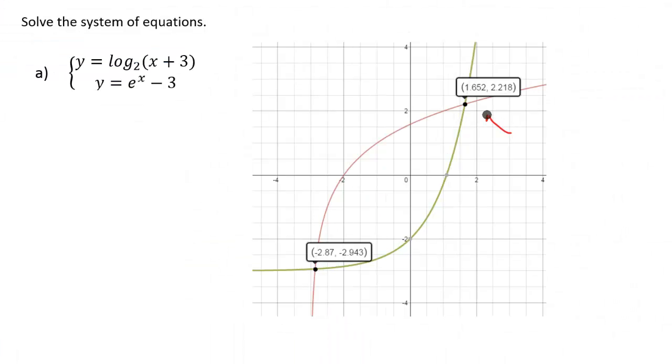So this was the first solution to the system. Our x was going to be approximately 1.652 with the y that was approximately 2.218. And then our other solution to the system was down there. This is going to be x is approximately negative 2.87 and then y is going to be about negative 2.943. So we had two solutions for this system.